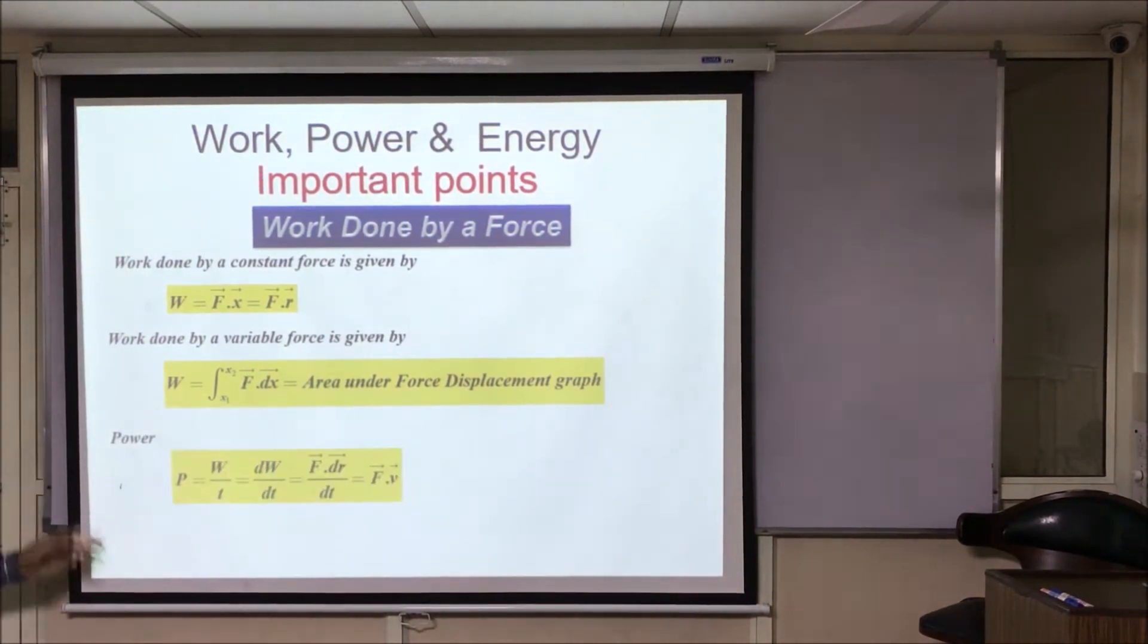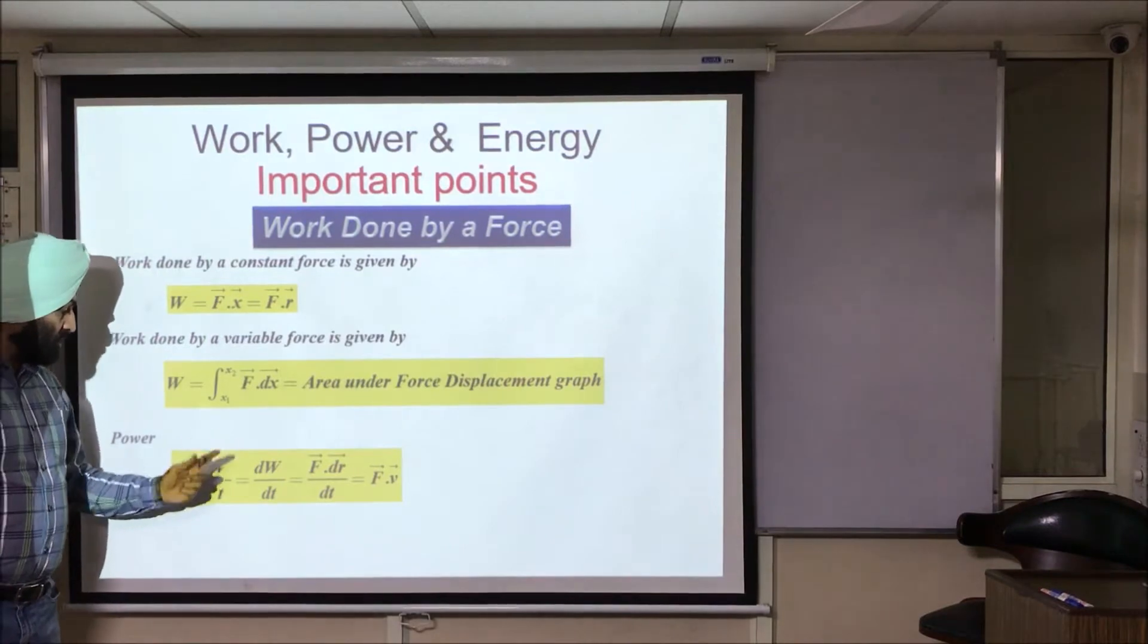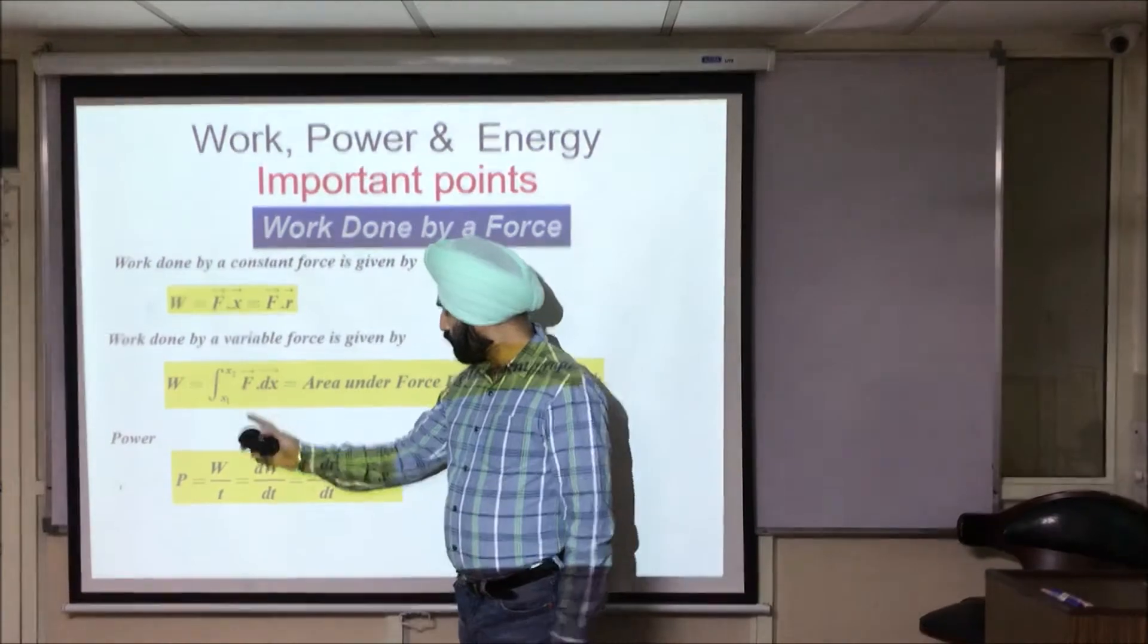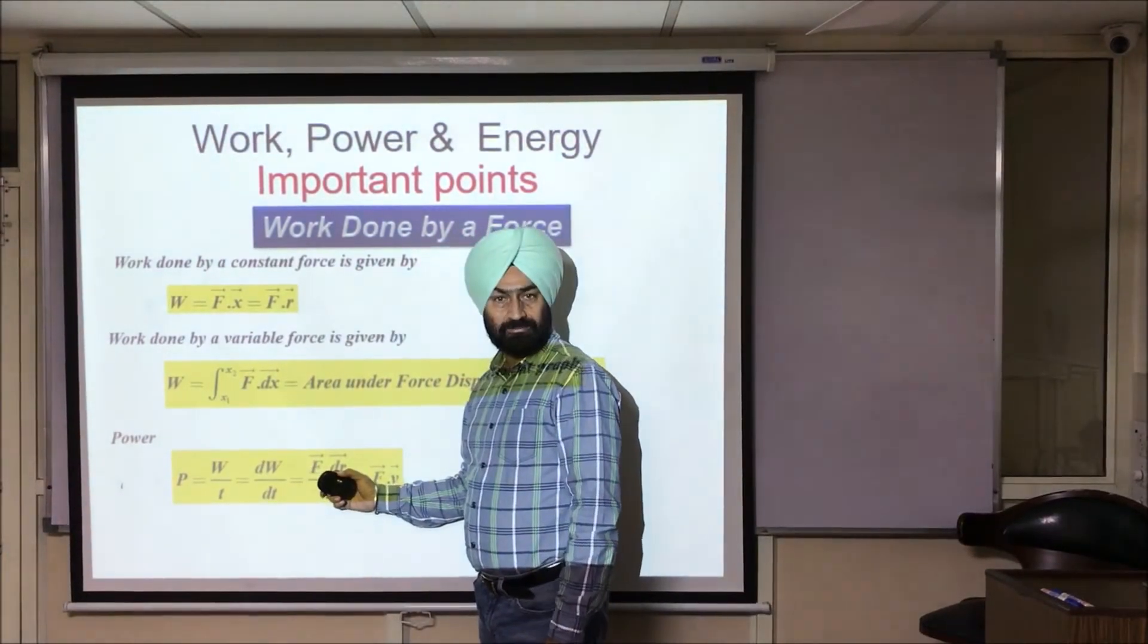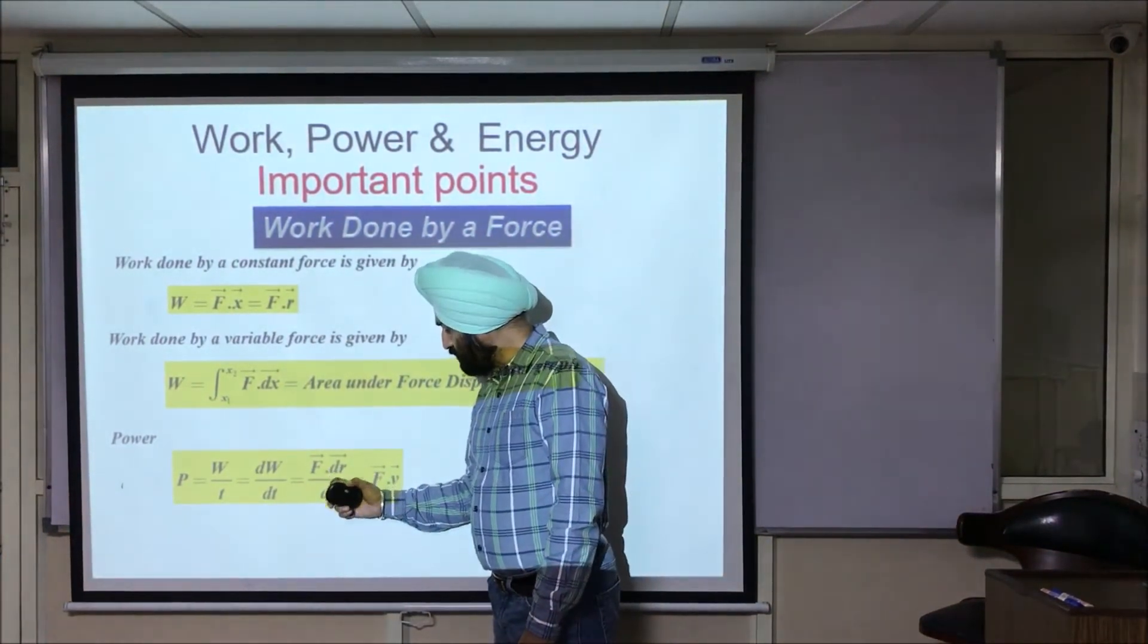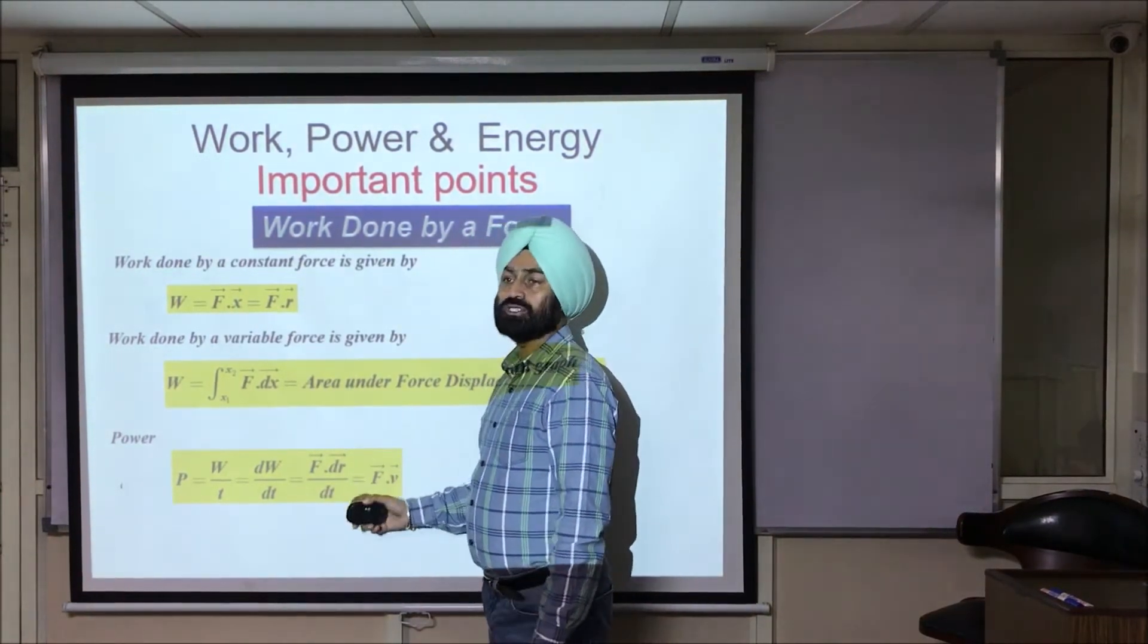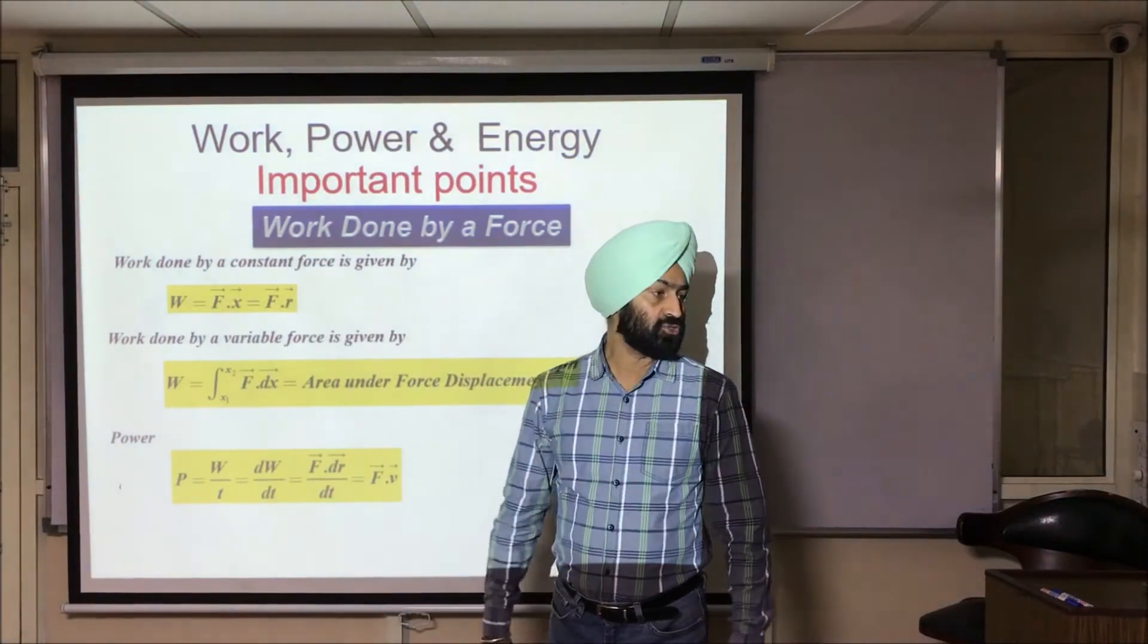Power, power is either work done per unit time or dw by dt. If expressed as force dotted with displacement, displacement divided by time is velocity. So force dotted with velocity also, one of the relations to be used.